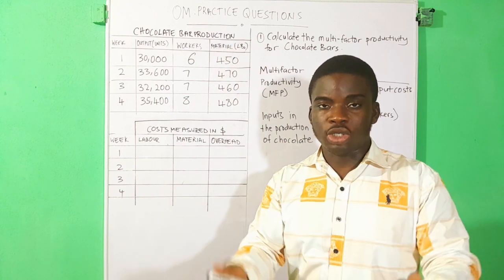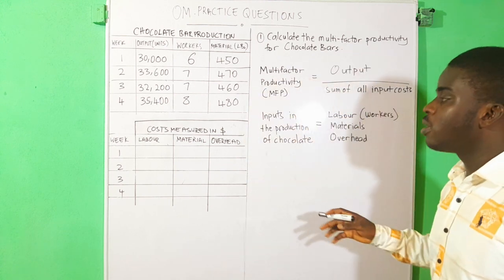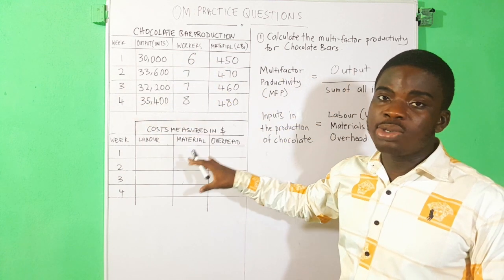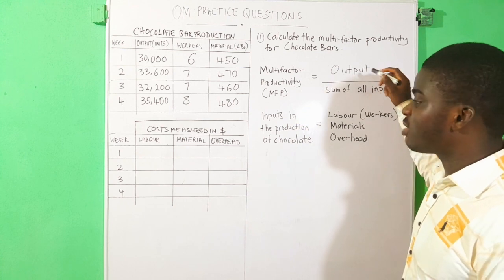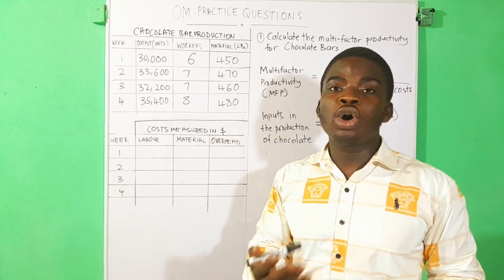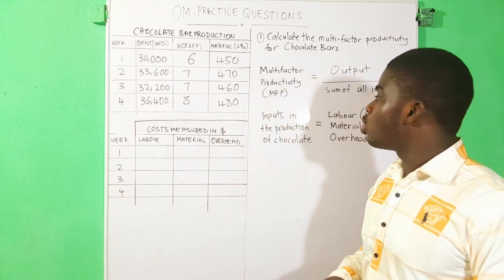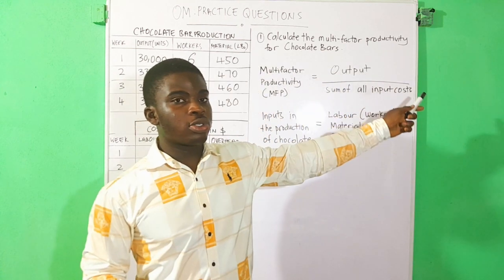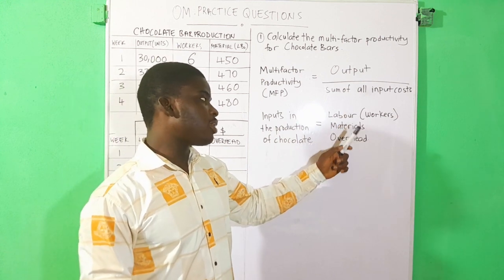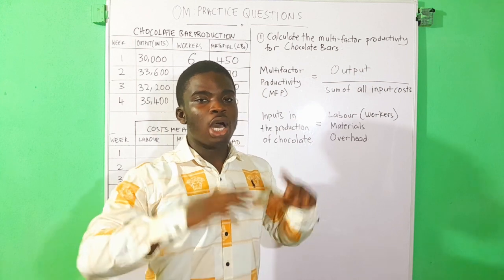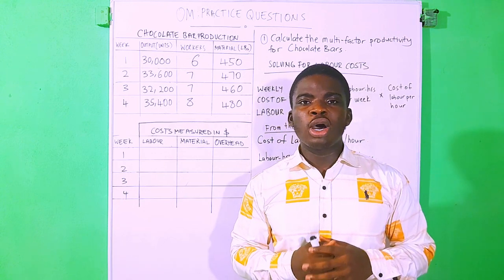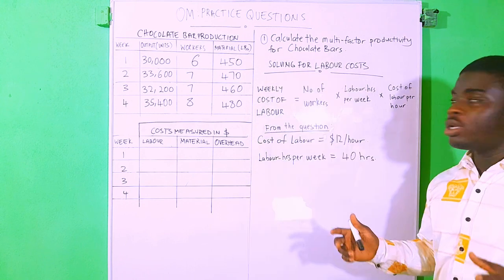We have prepared a table from the question, and this is another table we will use to solve for the multi-factor productivity. For four weeks given in the question — week one, two, three, and four — we want to solve all individually. The sum of all input costs in this question involves labor, materials, and overhead, so we are going to take a look at how all these are solved.